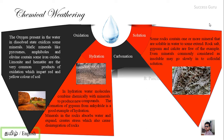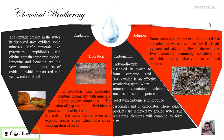Carbonation involves carbon dioxide combining with water to form carbonic acid, H2CO3, which is a highly reactive agent. This acid reacts with minerals containing calcium, magnesium, sodium, and potassium, converting them into carbonates and bicarbonates. The ultimate product of chemical weathering through carbonation is clay.